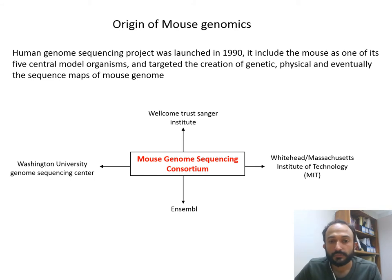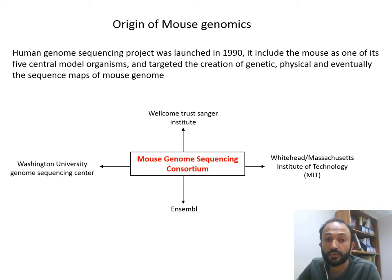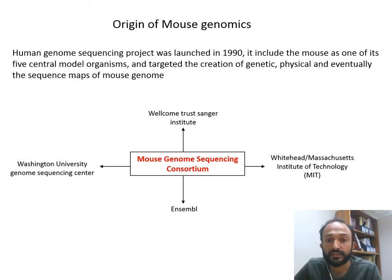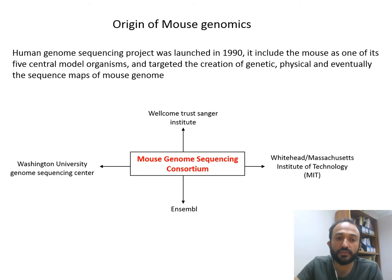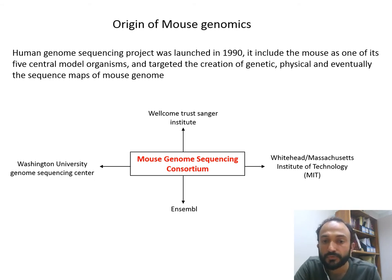The Human Genome Sequencing Project was launched in 1990, and it also included the mouse as one of its five central model organisms. It targeted the creation of genetic, physical, and eventually the sequence maps of the mouse genome.